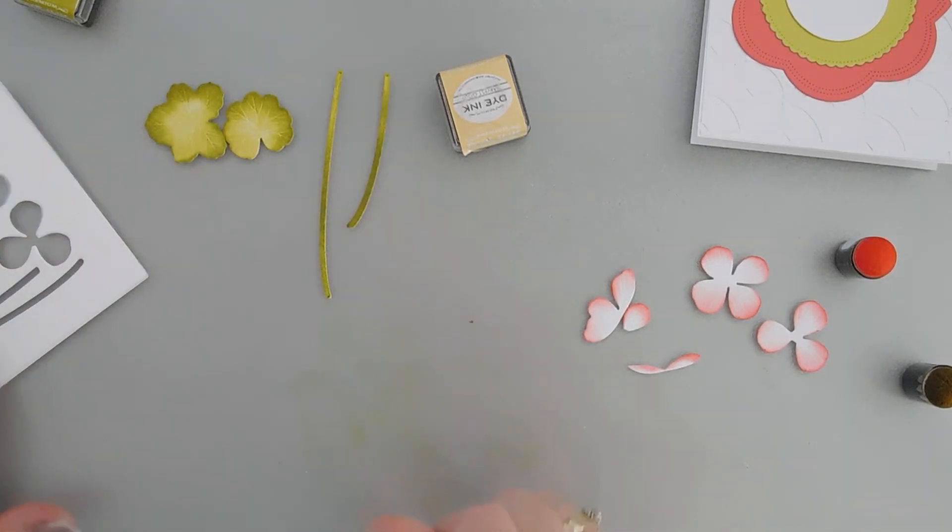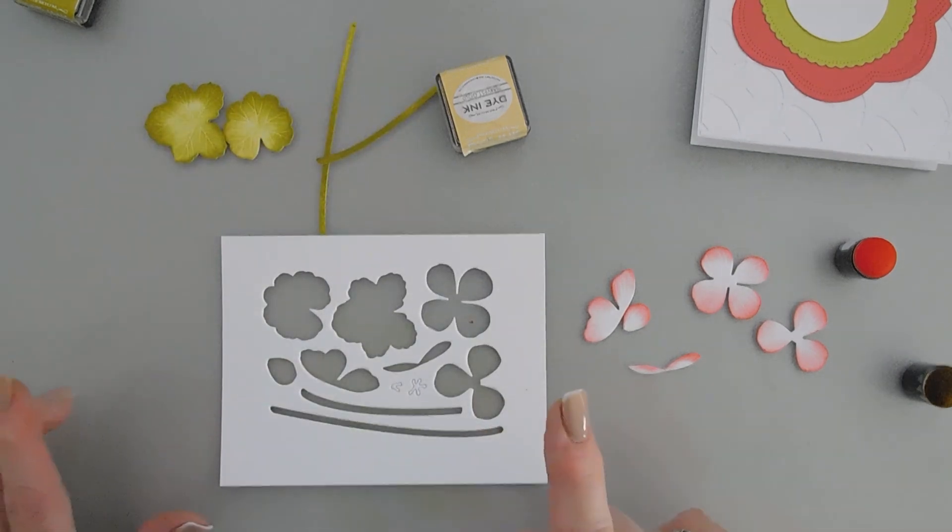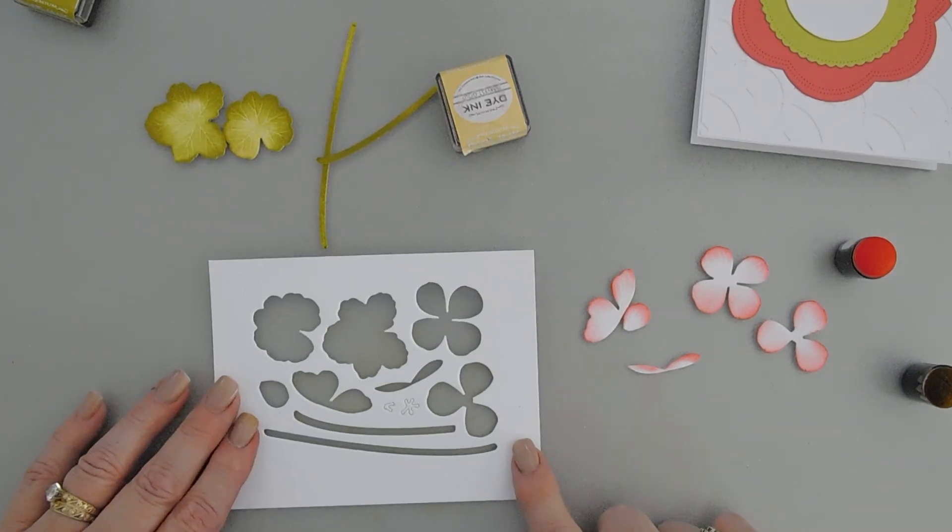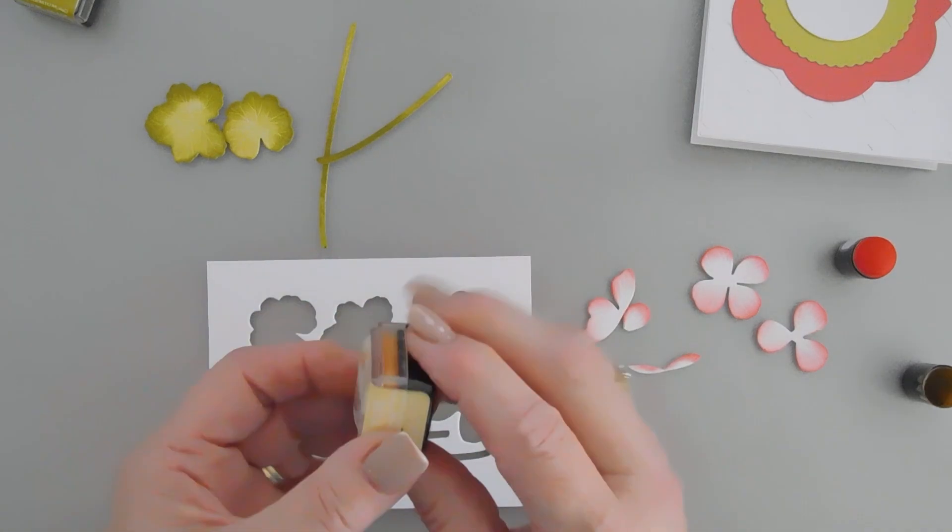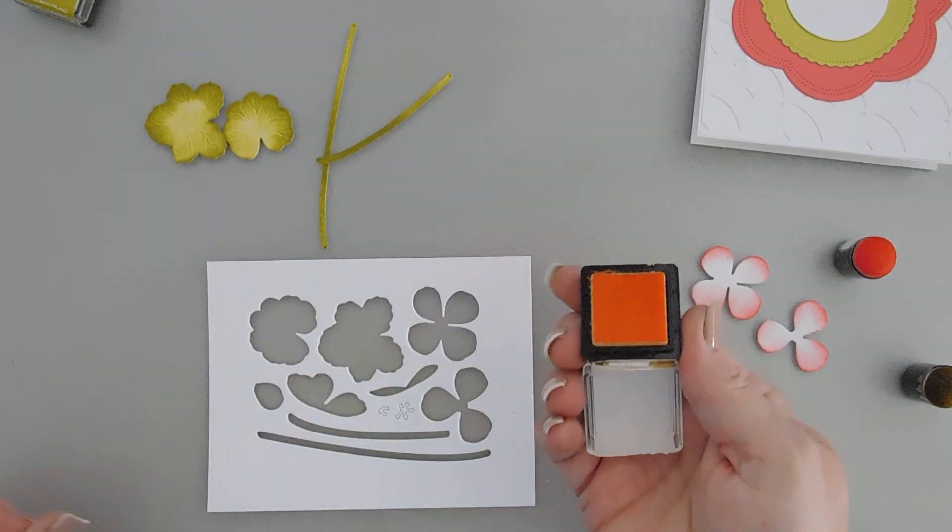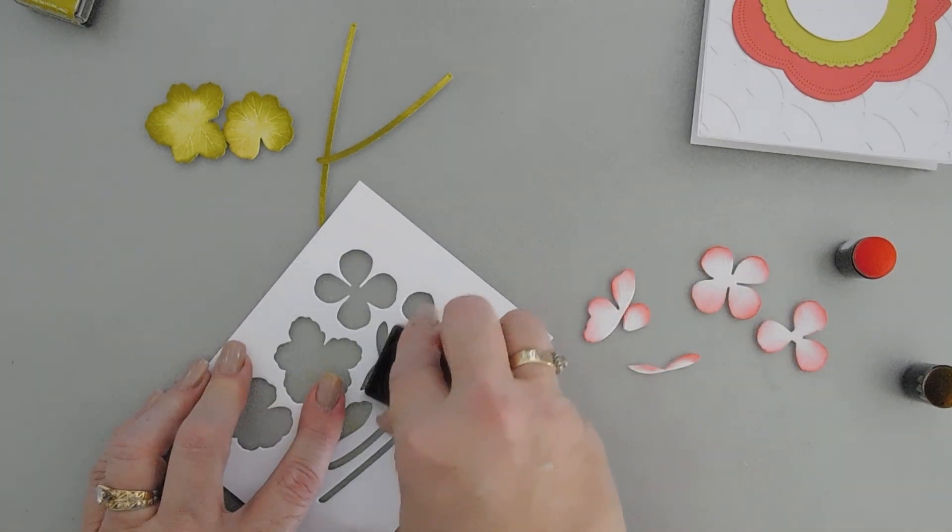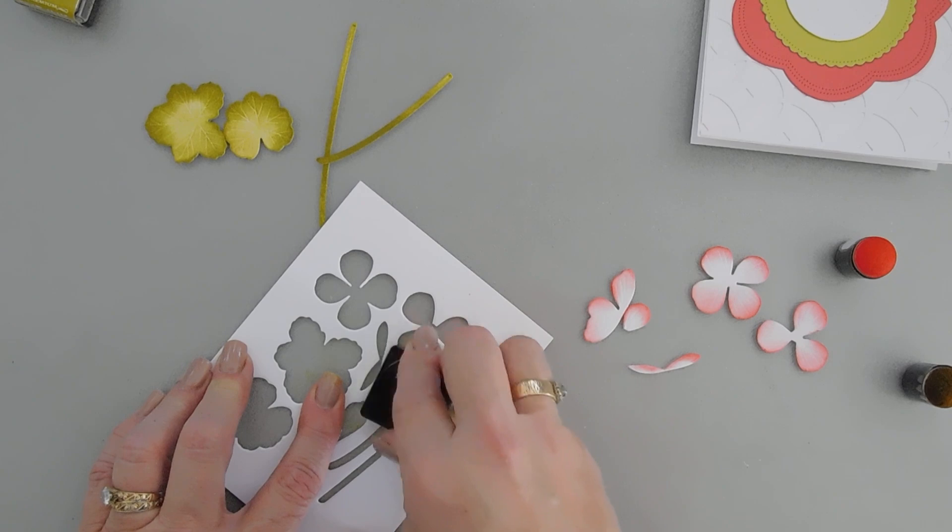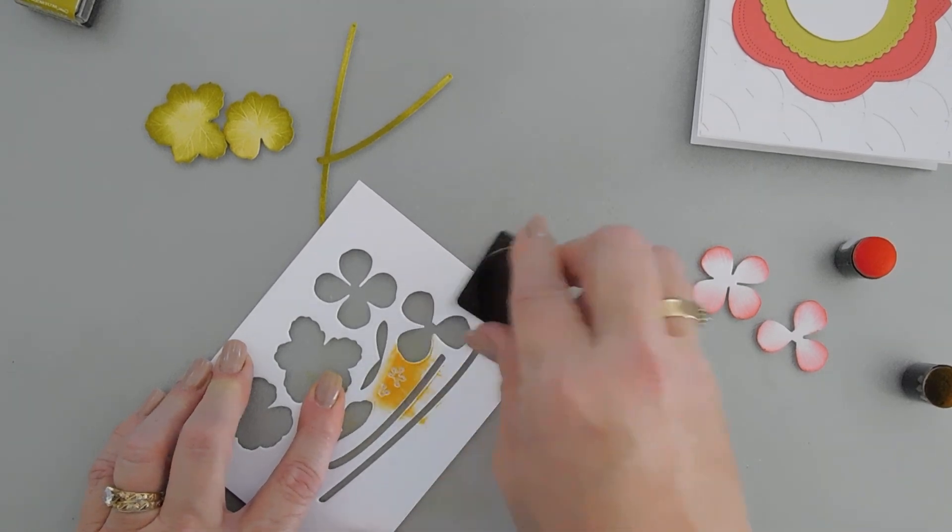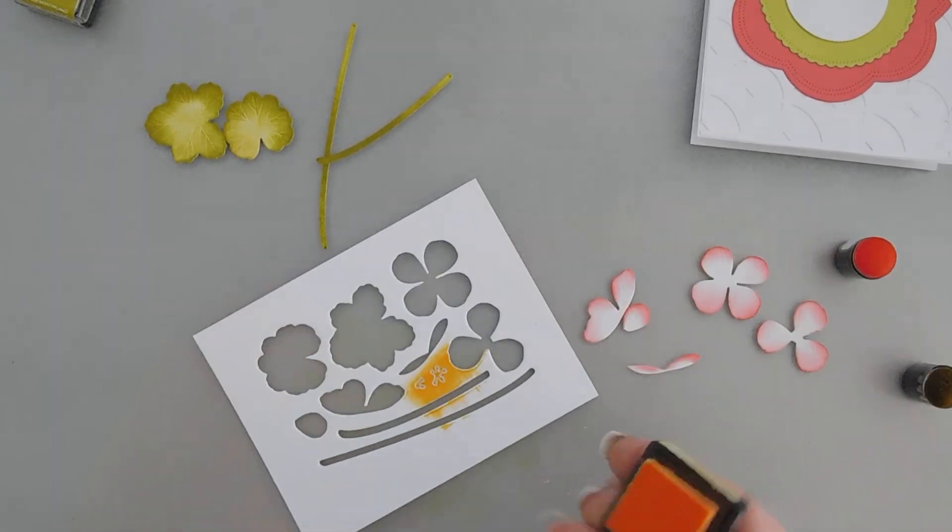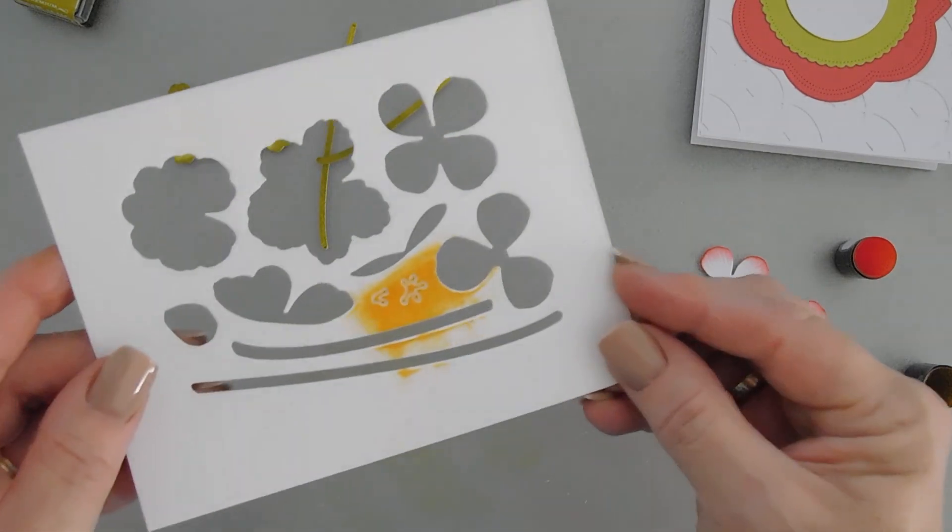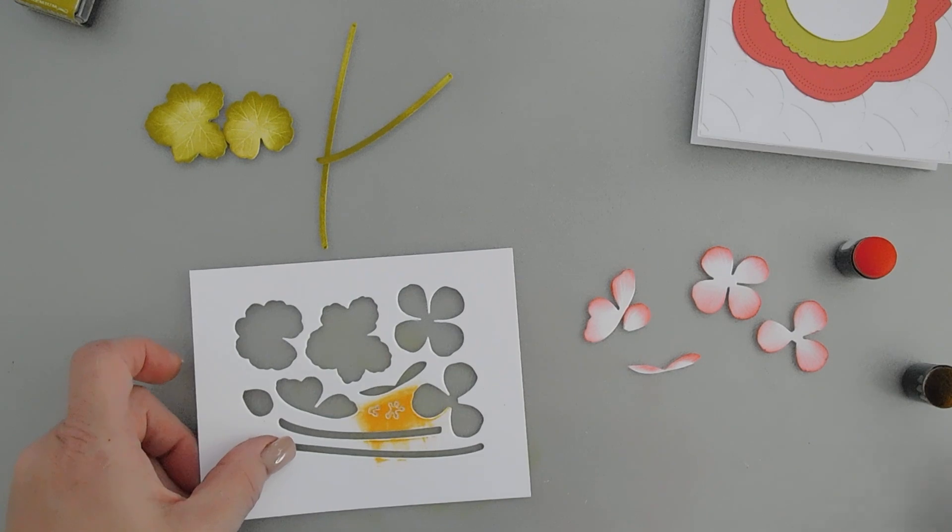One last thing before we start to put together our geraniums. I'm going to go ahead and use my Harvest Gold. I'm not even going to bring in a finger dauber. I'm going to go directly from my mini ink pad. And I'm just going to go over the flower stamens here. Like so. So our stamen is done. I'm going to push these out here.